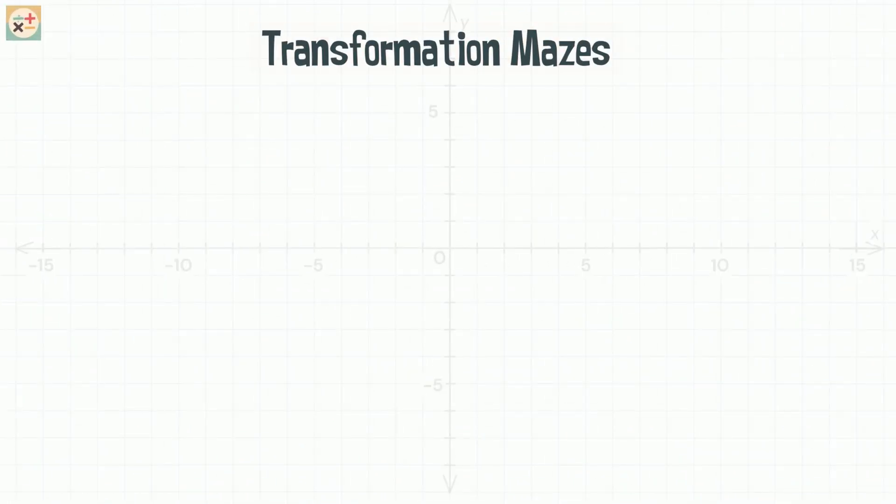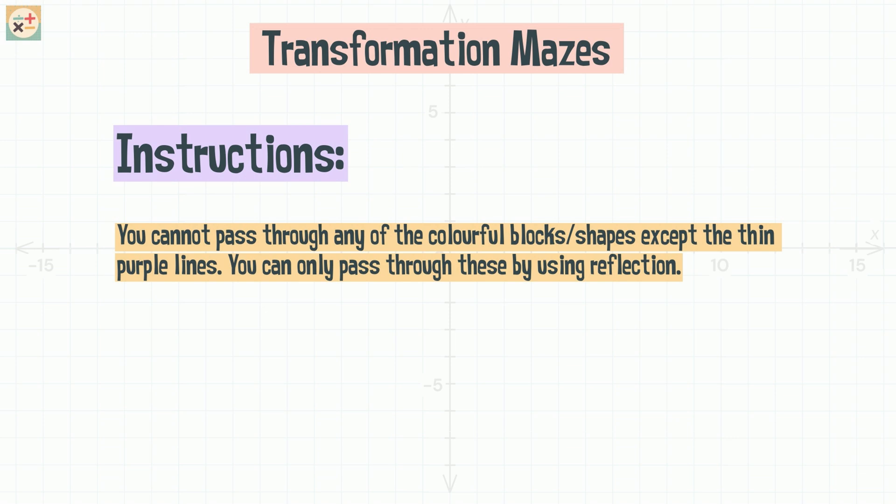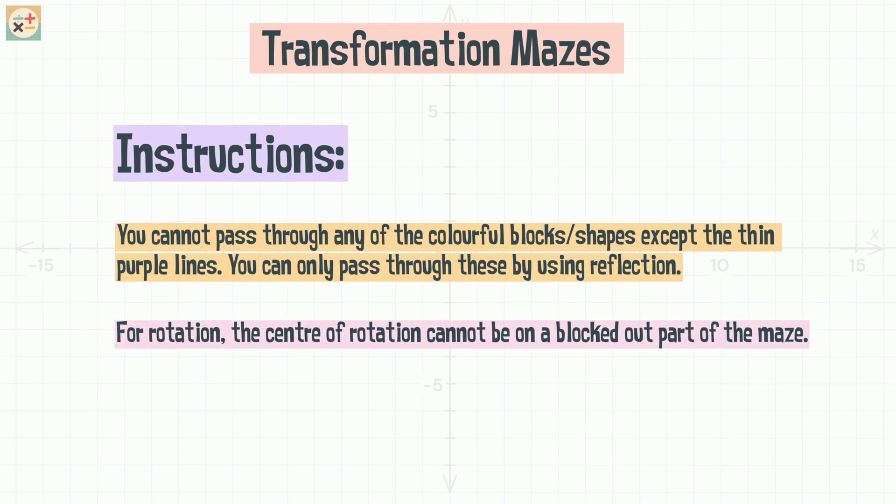Here are the instructions for both mazes. You cannot pass through any of the colorful blocks, except the thin purple lines. You can only pass through these by using reflection. For rotation, the center of rotation cannot be on a blocked out part of the maze.